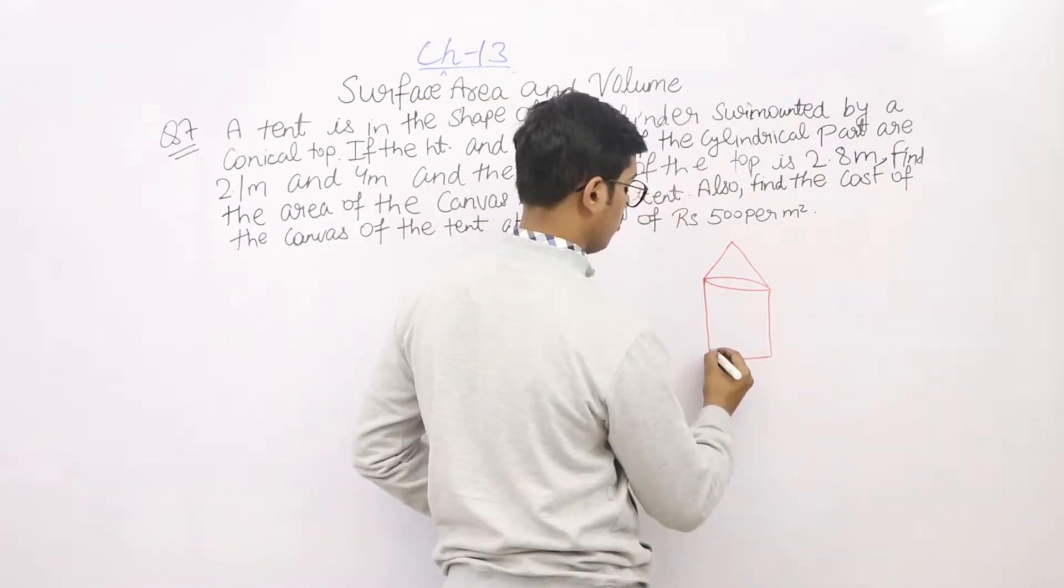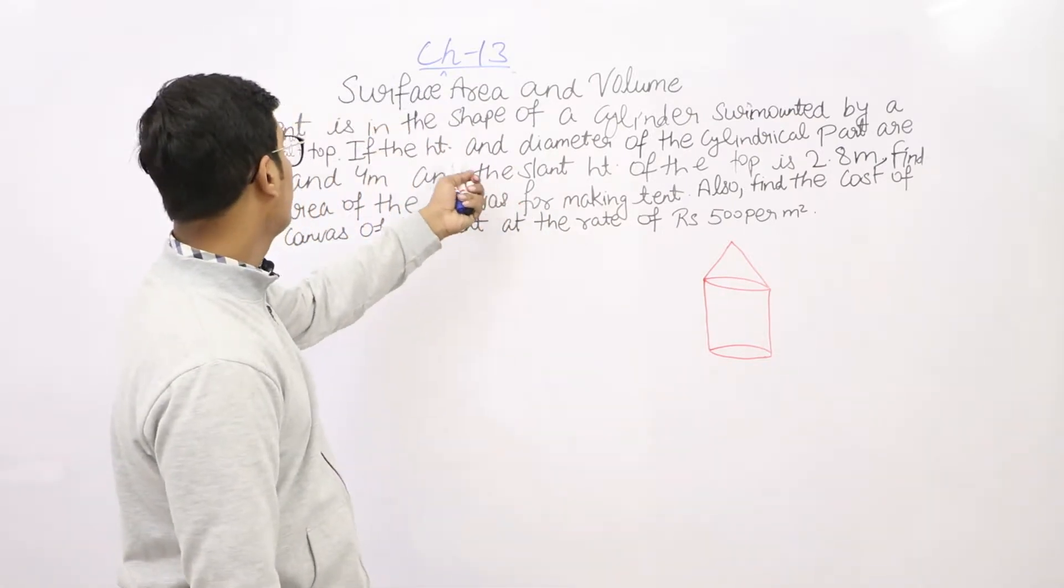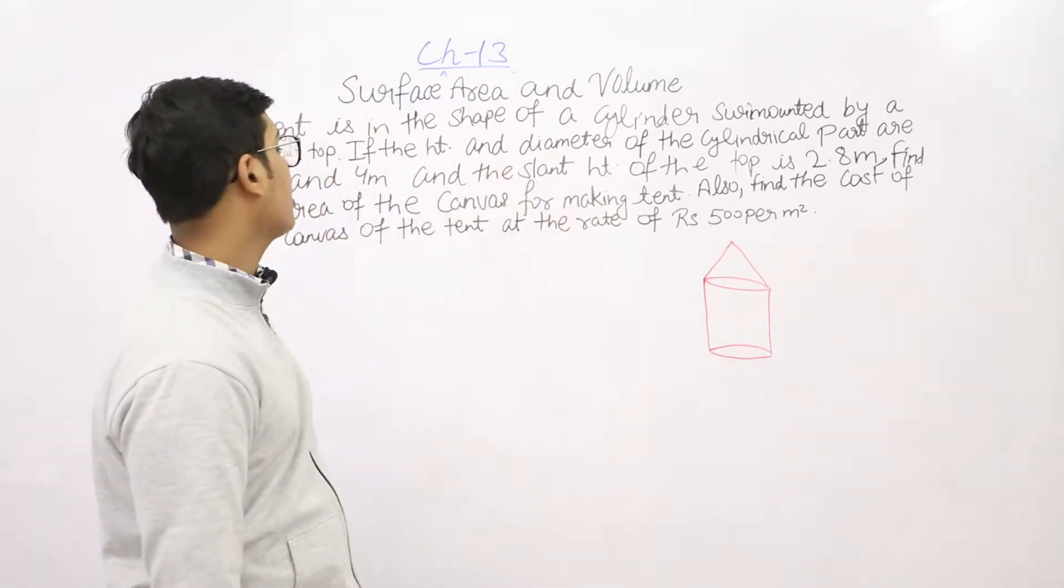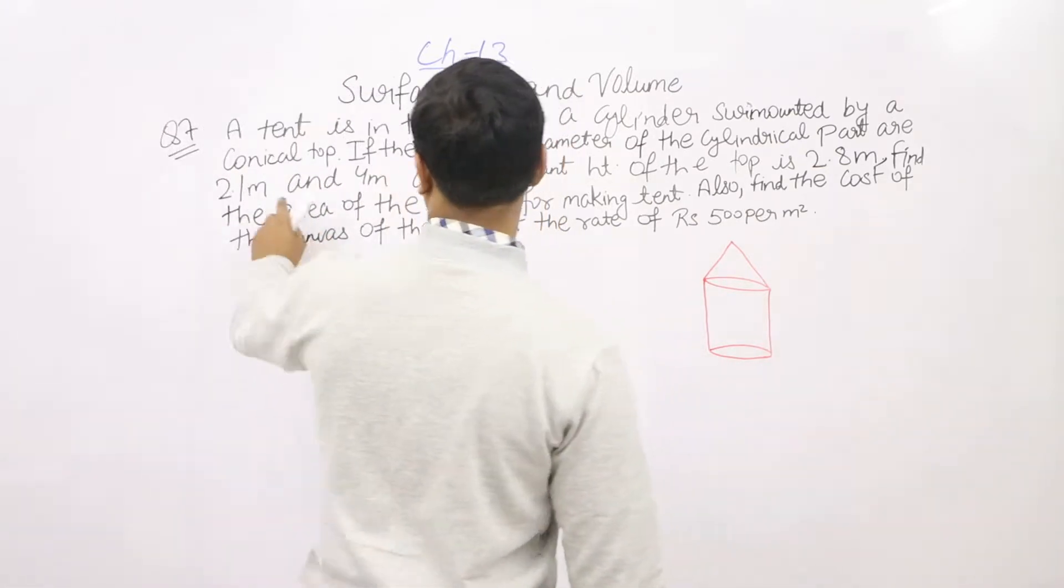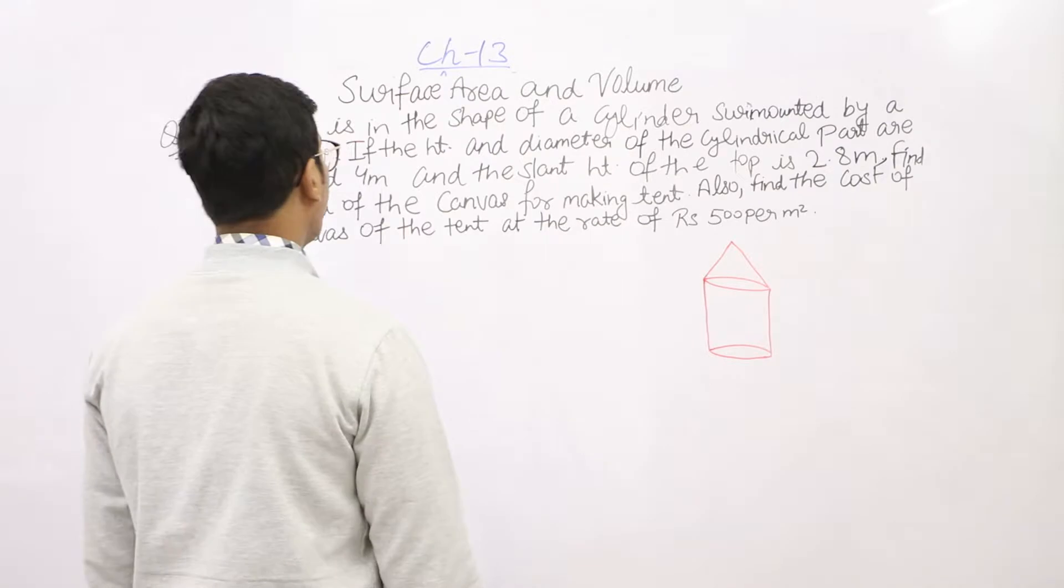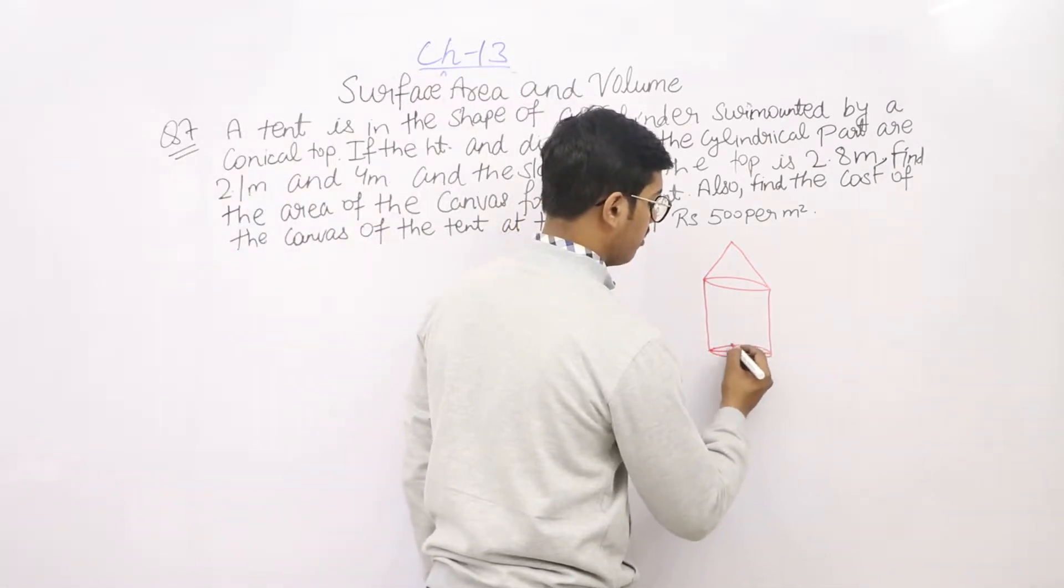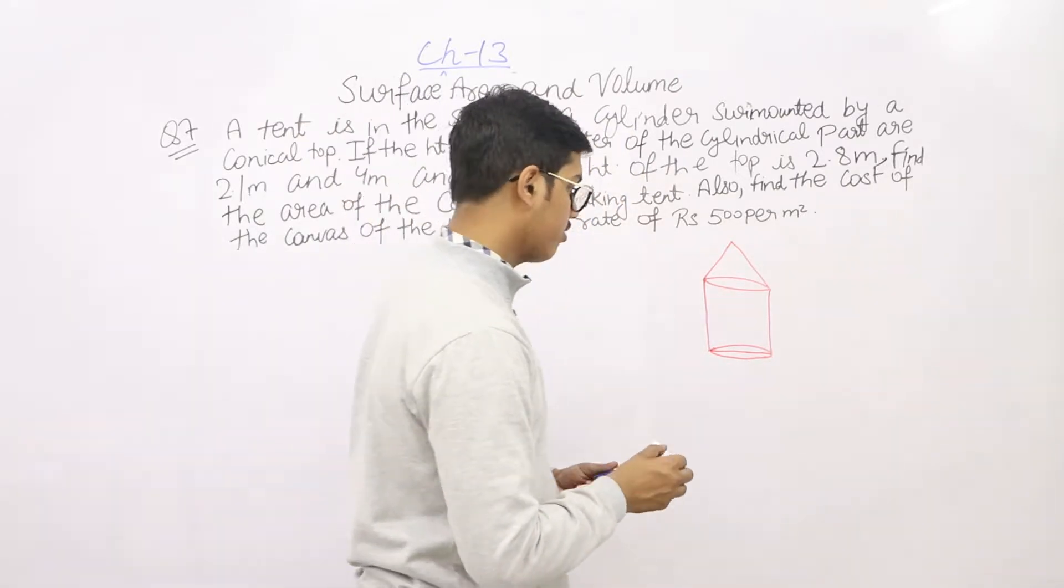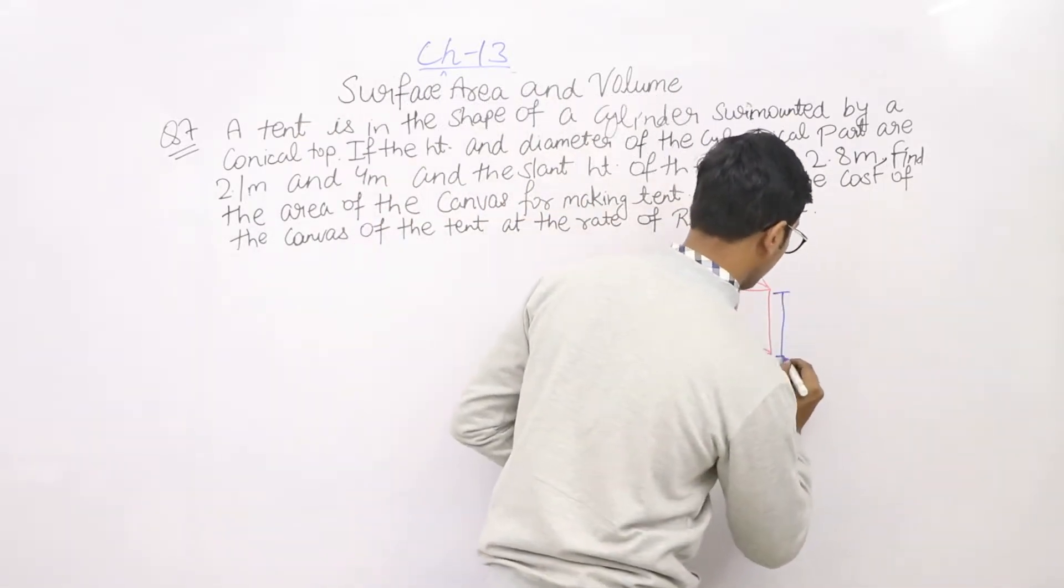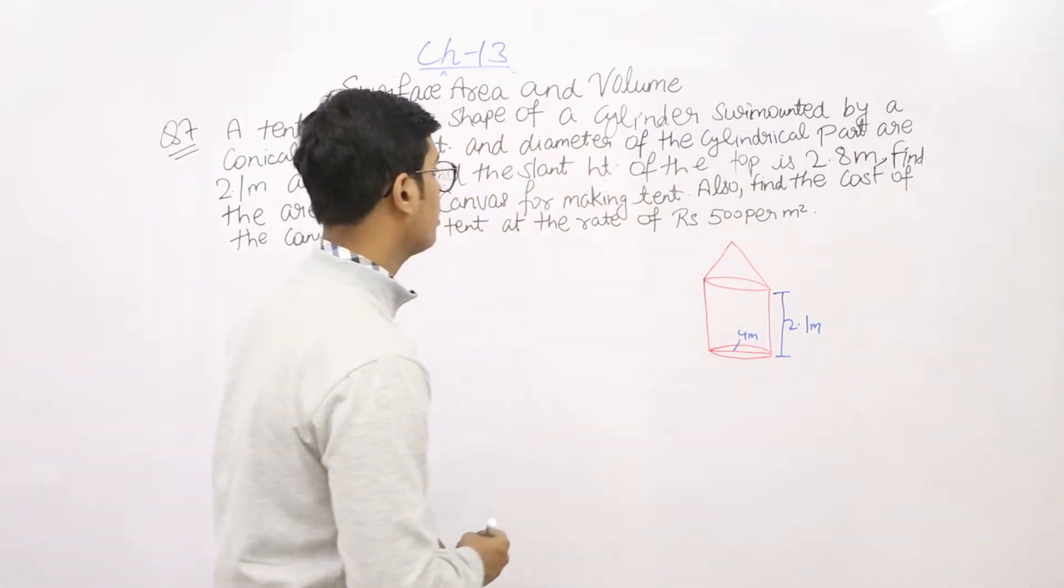The height and diameter of the cylindrical part are 2.1 meter and 4 meter. The diameter is 4 meter and the height is 2.1 meter. The height of the cylinder is 2.1 meter, diameter is 4 meter.